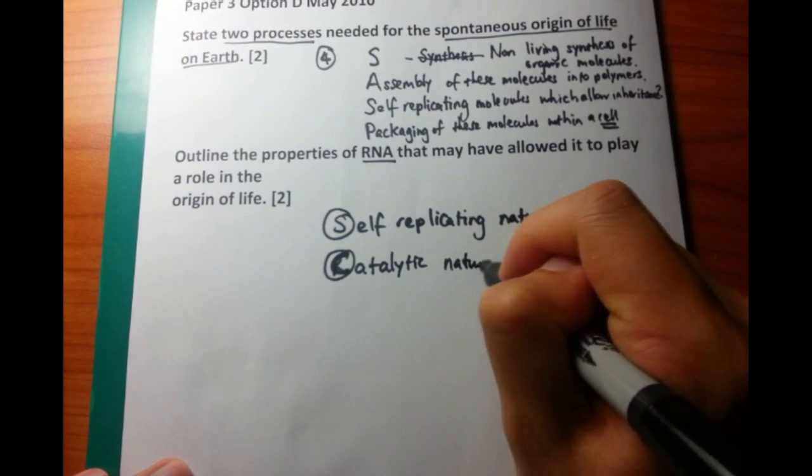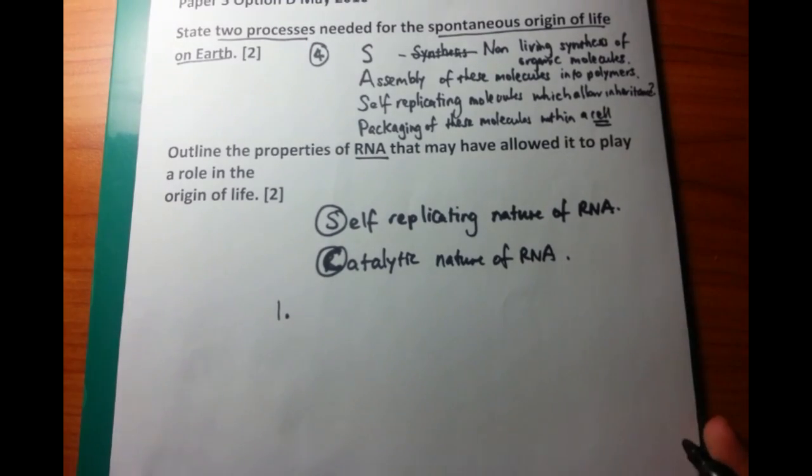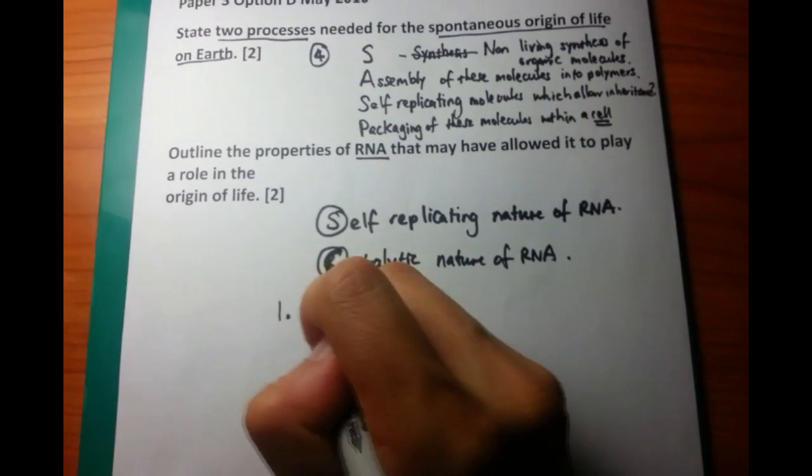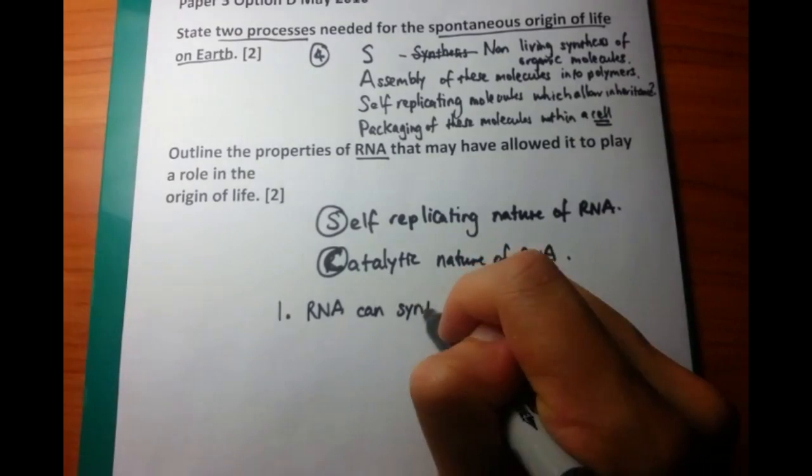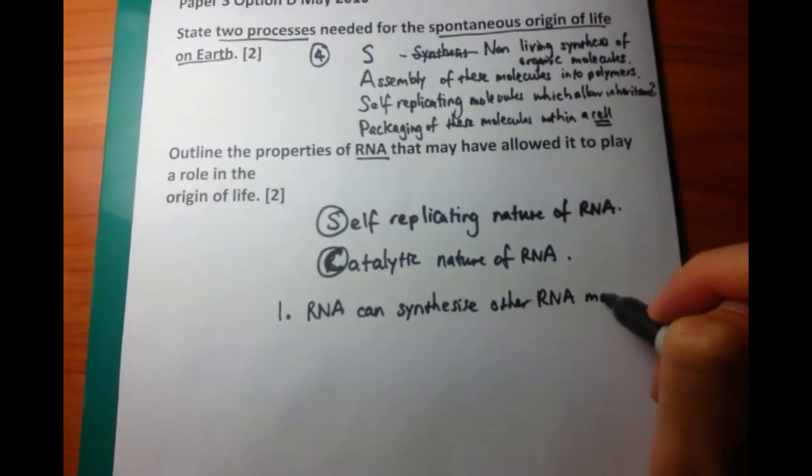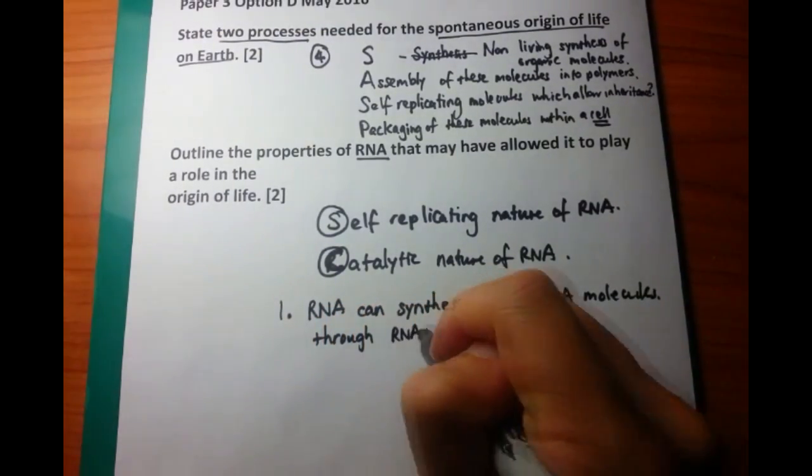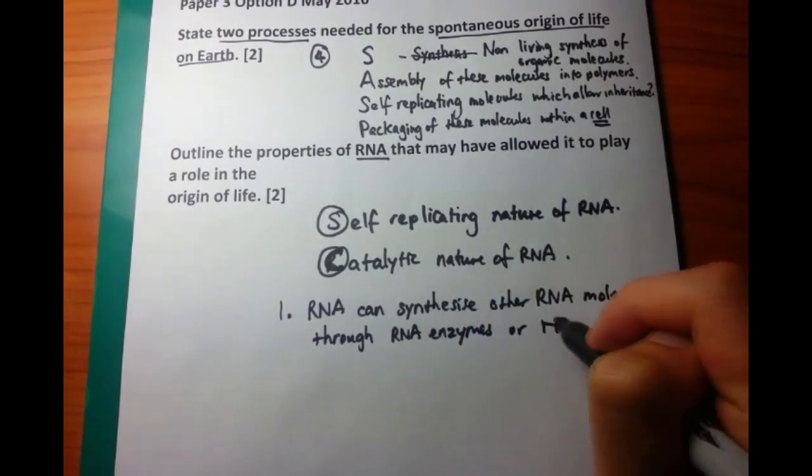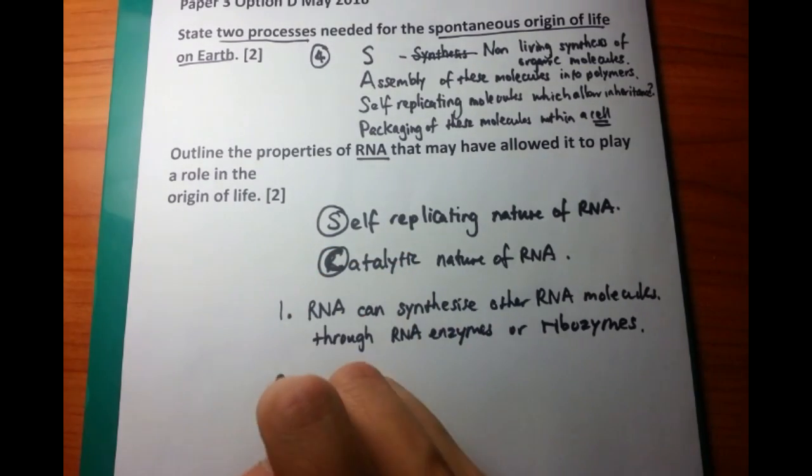So let's talk about the self-replicating nature. What do I mean by that? Well, this is not so obvious in the current organisms because we have DNA. But originally, ribonucleic acid could synthesize other RNA molecules within itself. So when you have RNA, you could build up more molecules of RNA within itself. And this is through RNA enzymes, or ribozymes. And this is one particular example of how life could have started with RNA.